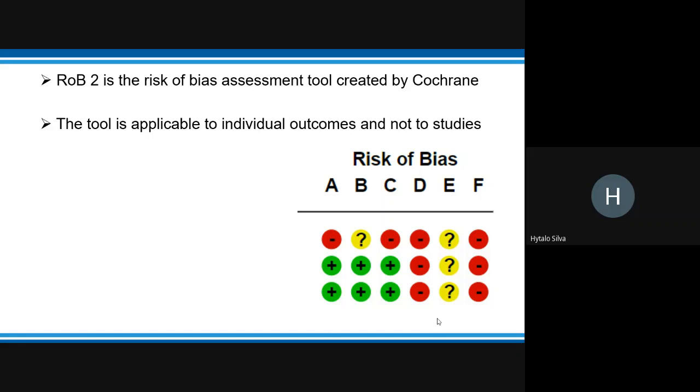ROP2 is the risk of bias assessment tool created by Cochrane. The tool is applicable to individual outcomes and not to studies.